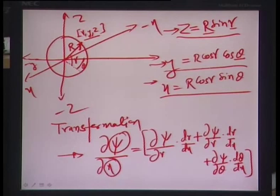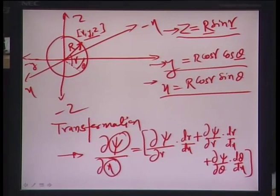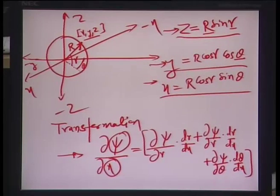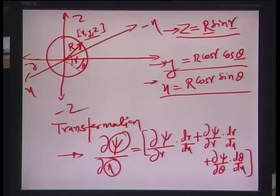Welcome back to lecture number 8 of this course. Last time we saw how to do the coordinate transformation. Before that we tried to get into ionic activity and derive the activity coefficient using the Debye-Hückel equations. We just about started on that after essentially completing the grand plot scheme of calibration and measurement of electrodes.